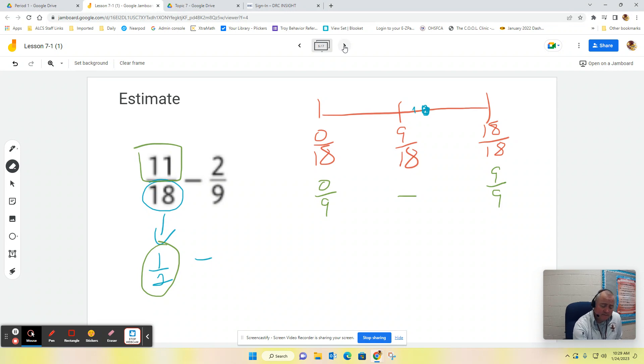Half of nine really is 4.5. And normally, we don't write fractions like this. But when we're doing benchmarks, I think it's okay. Because now I just have to look at this number two. And I have to say, okay, is two closer to zero, or closer to four-and-a-half?